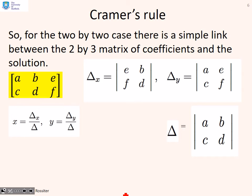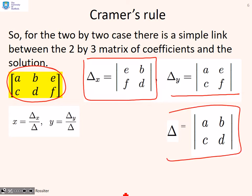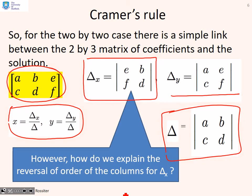So for the two by two case, there's a simple link between the two by three augmented matrix of coefficients and the solutions for x and y. Delta_x is given by this determinant, the determinant of e, b, f, d. Delta_y is the determinant of a, e, c, f. And delta is the determinant of a, b, c, d. You can see that x is delta_x over delta and y is delta_y over delta.